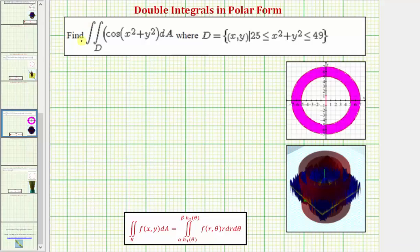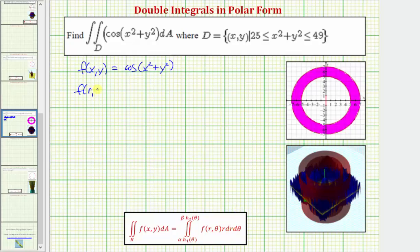So going back to our work, again we know that f of x comma y is equal to cosine of the quantity x squared plus y squared. We need a function in terms of r and theta for the double integral in polar form. So f of r comma theta would be equal to cosine of r squared, since x squared plus y squared equals r squared.